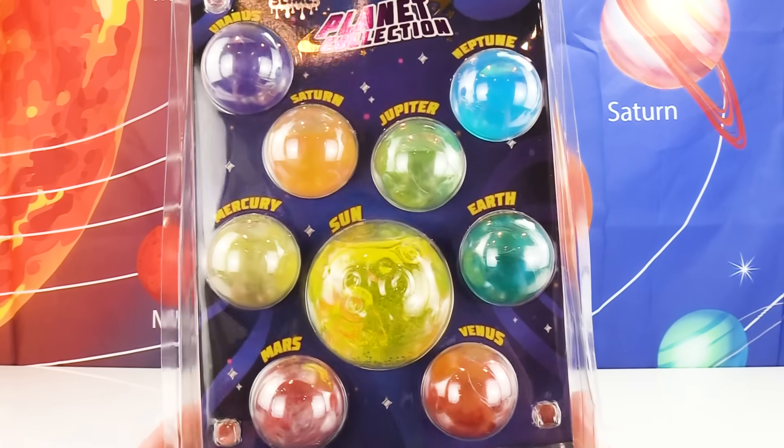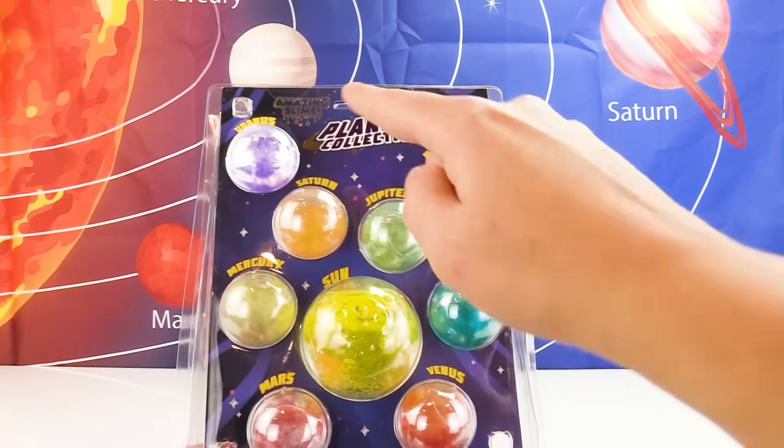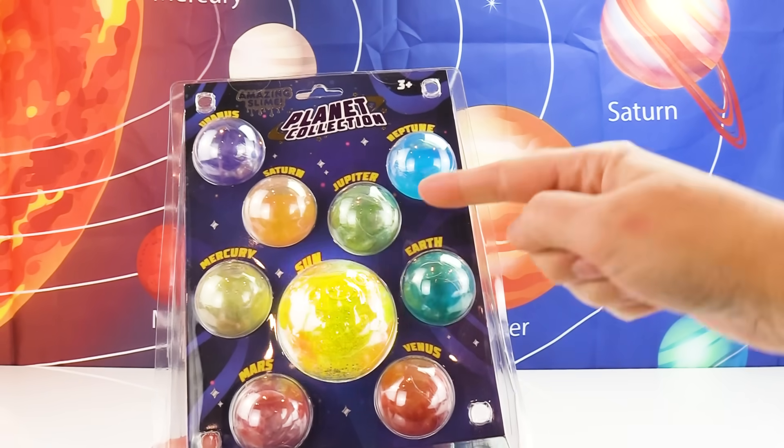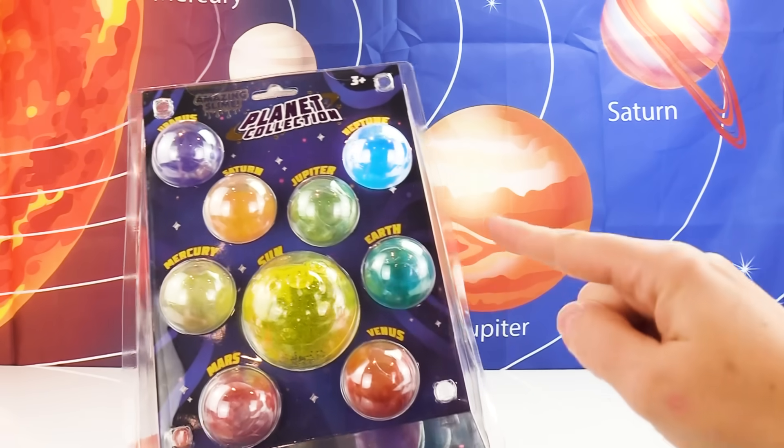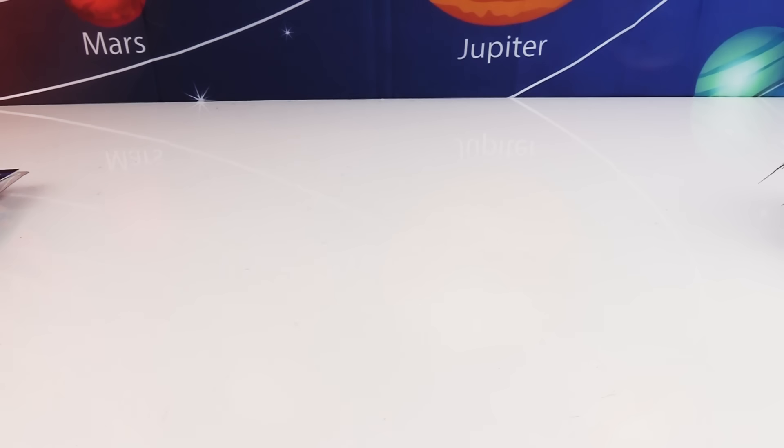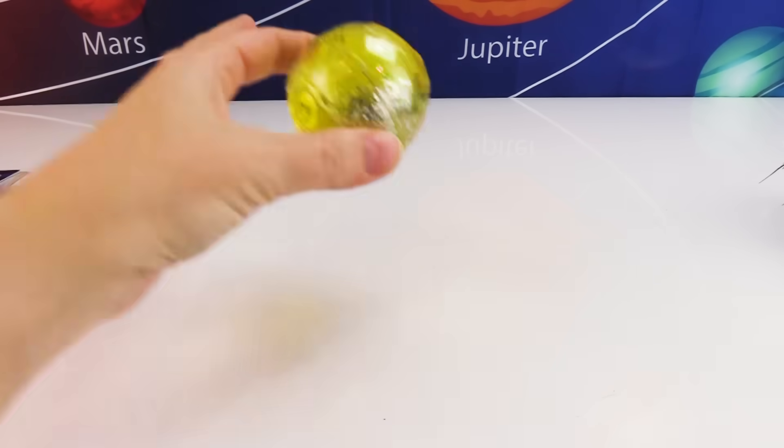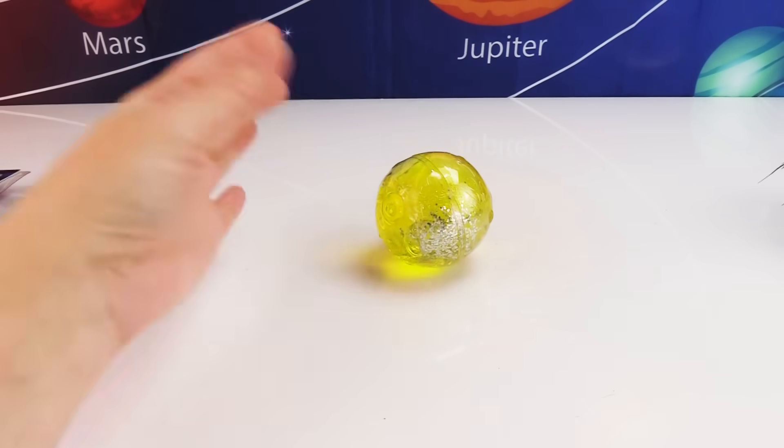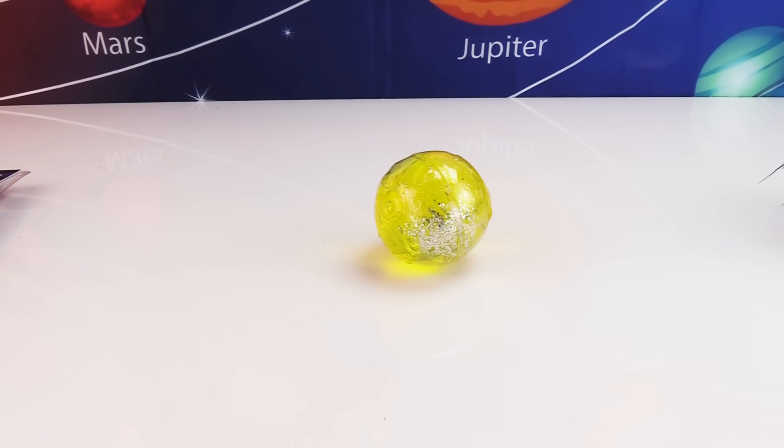Very cool surprise, Fizzy! Look, we have Uranus, Saturn, Mercury, Mars, the Sun, Jupiter, Neptune, Earth, and Venus! Let's get out this slime! So up first, we have the Sun! Which planet is closest to the Sun? Mercury!